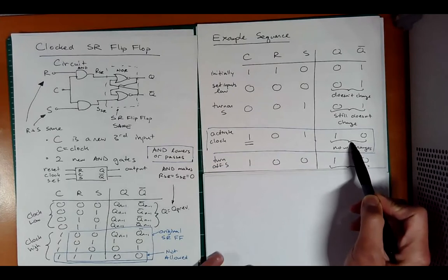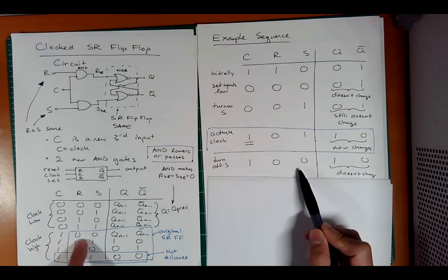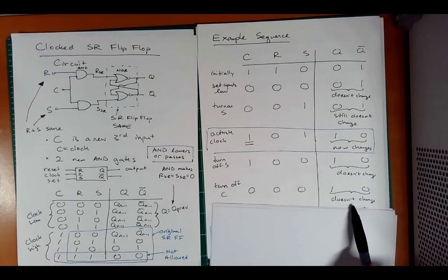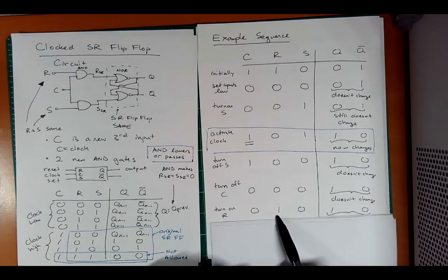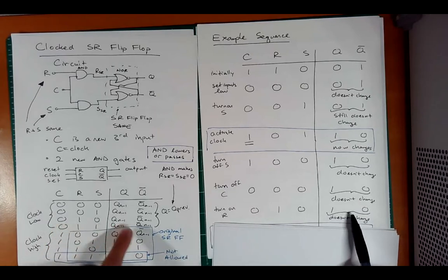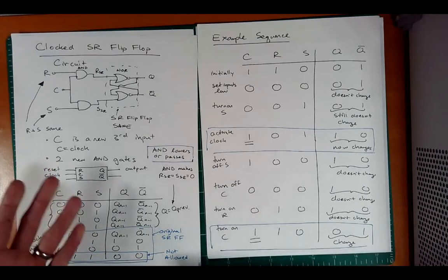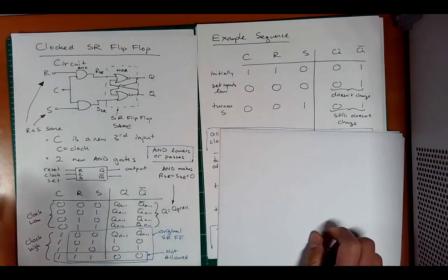If I turn the set off, we're in a holding pattern. I turn the clock off again, nothing happens — I still have Q high. Now if I hit the reset while the clock is off, nothing happens. But if I activate the clock, I see the change where Q gets set back to zero. So the clock is just an enable feature for your normal SR flip-flop.